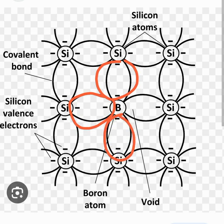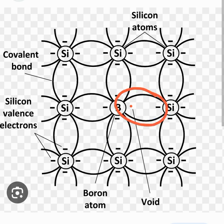But there will be a deficiency or void of one electron, as boron has only three electrons. So that deficiency — or void, or absence of an electron — will not be able to form a covalent bond right over here. That void will instead create a hole, which is the opposite of an electron.